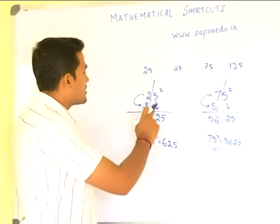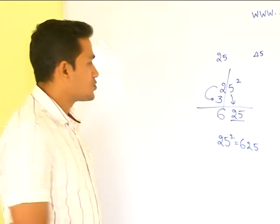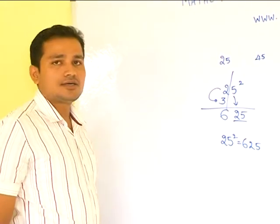So, notice that a number which ends in 5 always will have 25 as the last digit. So, only you have to multiply the rest of the digits to obtain the answer.